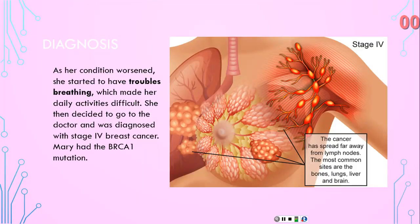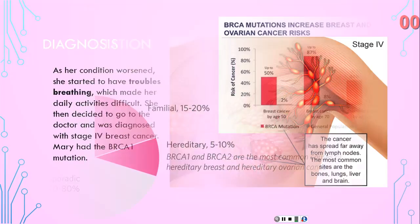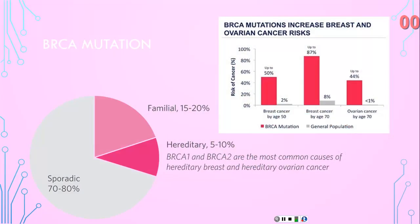In stage 4 breast cancer, the cancer has spread into the lymph nodes and into other places in the body like the lungs, liver, and bones. Mary had the BRCA mutation. BRCA1 and BRCA2 mutations account for about 20 to 25% of hereditary breast cancers and 5 to 10% of all breast cancers. We are going to focus on just the BRCA1 mutation.